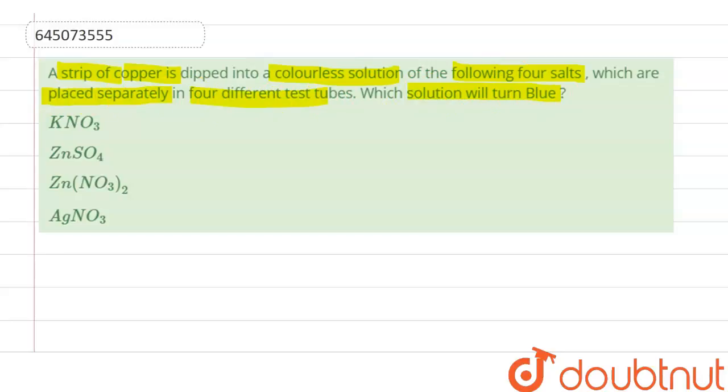Let us see. First is potassium nitrate. When copper reacts with potassium nitrate, no reaction will take place, as we know that potassium is more reactive than copper in the reactivity series. So from here we can say that copper doesn't displace potassium here.